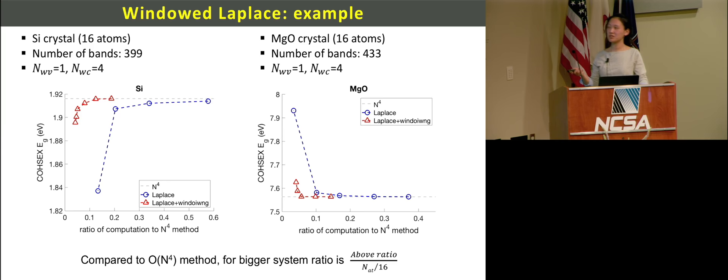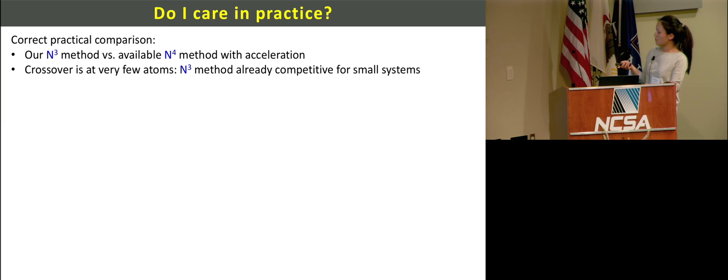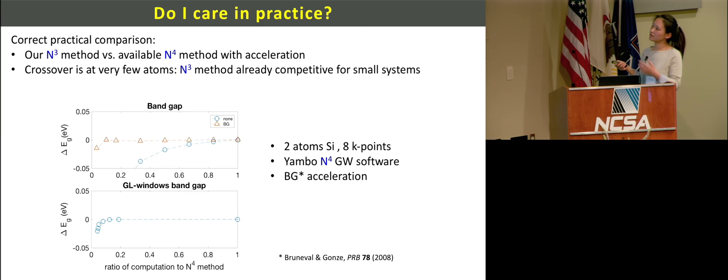In practice, our method is really good. Where is the crossover of our cubic method? We tested our system with other software, which is n to the fourth method with small prefactors. This is YAMBO code, the quartic method GW software. I used the two atom silicon crystal with 8K points. This is without acceleration, this red is with acceleration of YAMBO code, and this is our windowed Laplace method. As you can see, we get pretty similar error as the YAMBO code gives us. Even for this small, very small, like two atom system, we see similar savings. Our method is cubic, so if the system size gets bigger, then the saving would be much better.